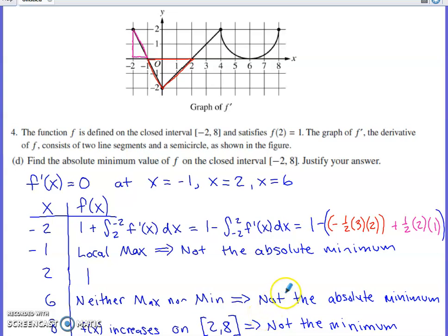We'll go on to the last part of the problem. Part D says find the absolute minimum value of f on the closed interval negative 2 to 8. Justify your answer. When you're trying to justify an absolute max or an absolute min on the AP exam, you want to show that you're analyzing all of the candidates for where those might occur. The candidates would be the end points of your interval. You're going to have to consider negative 2, you're going to have to consider 8.